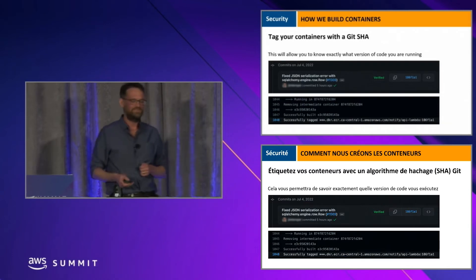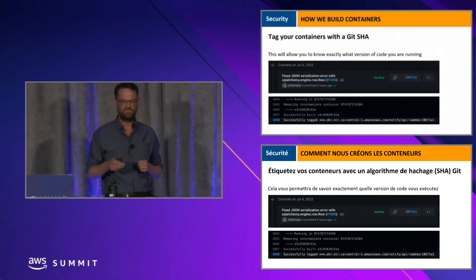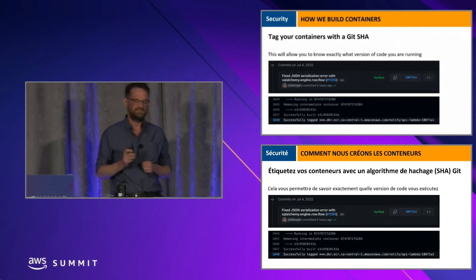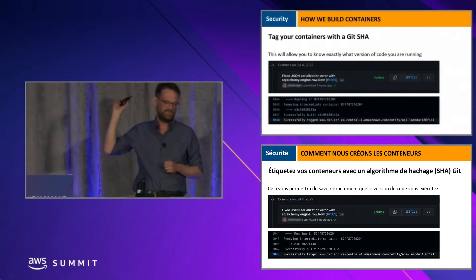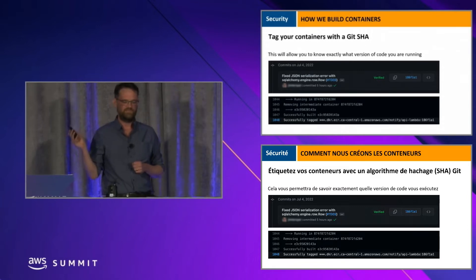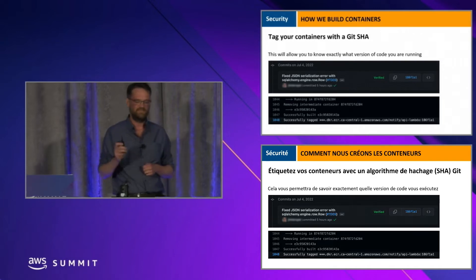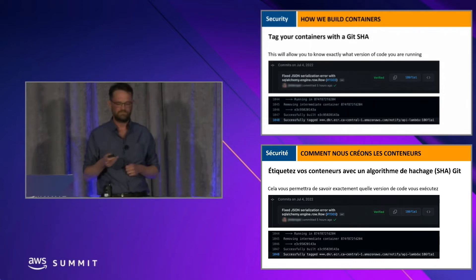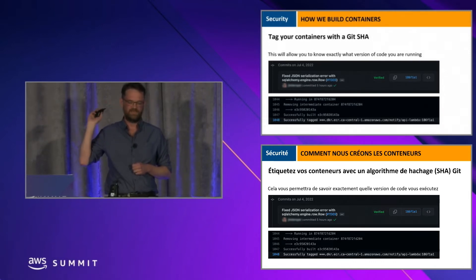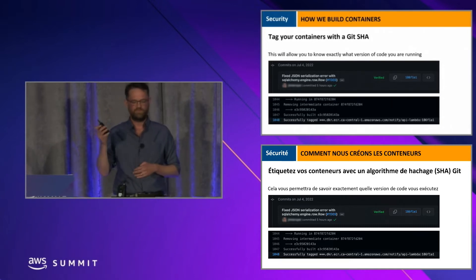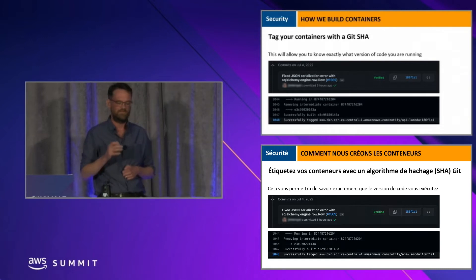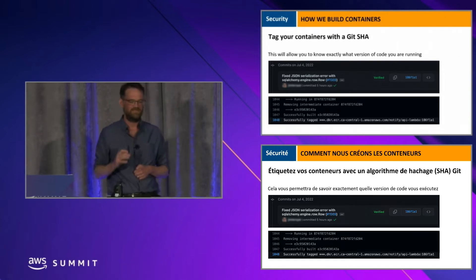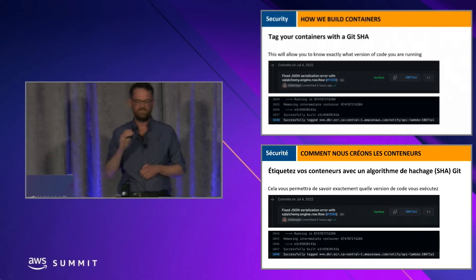The next recommendation is to tag your containers with a Git SHA. This allows you to know exactly what version of code you are running. You can see a commit line for Git with a change by a developer at CDS — a fix for a JSON serialization error with the SQL Alchemy Engine — and the seven-character abbreviated Git SHA that references this fix. Our CI/CD pipeline tags the container image with that SHA exactly.